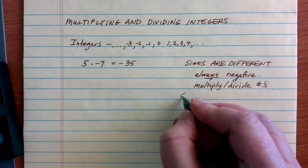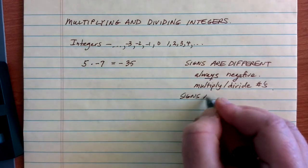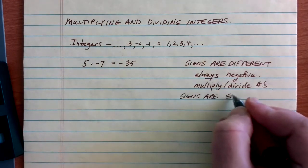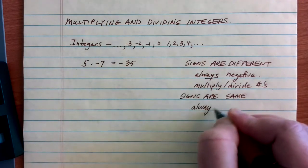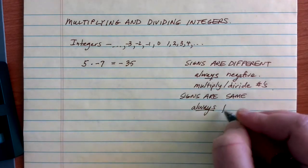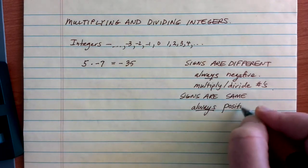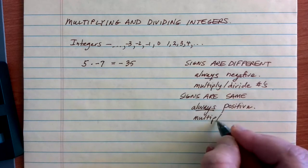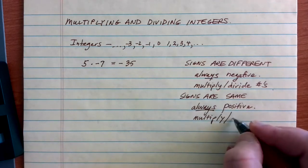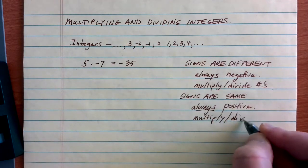Now, if our signs are the same, our answer is always going to be positive. And just like last time, we're going to multiply and divide the numbers just like we normally would.